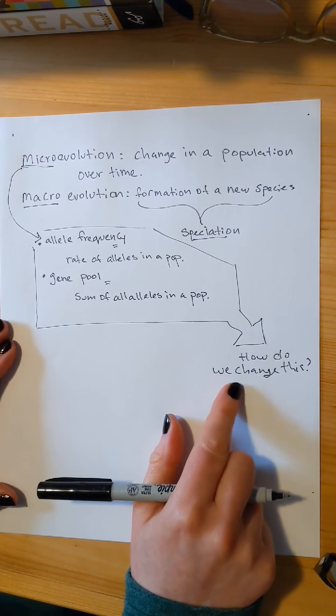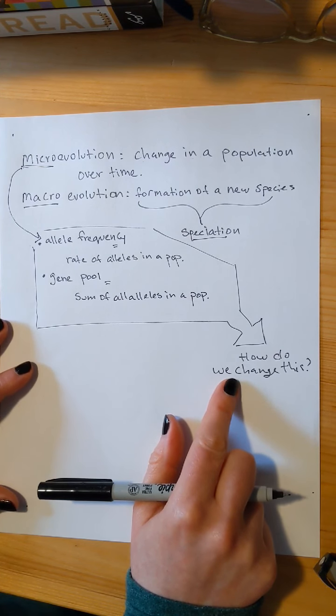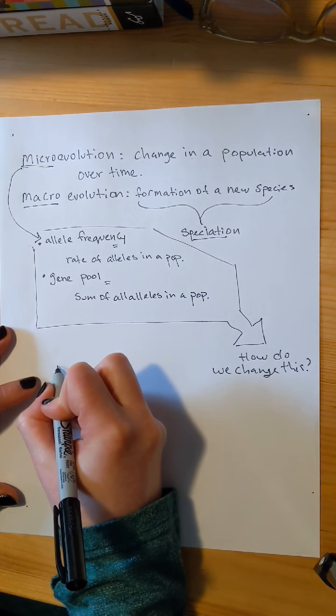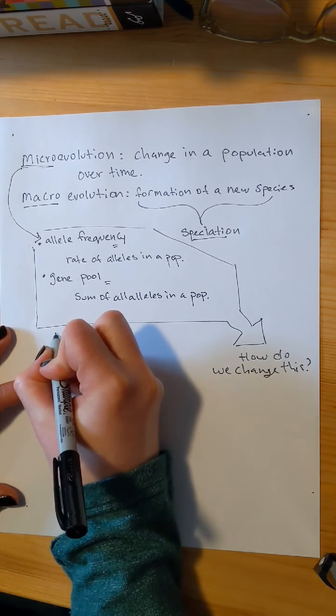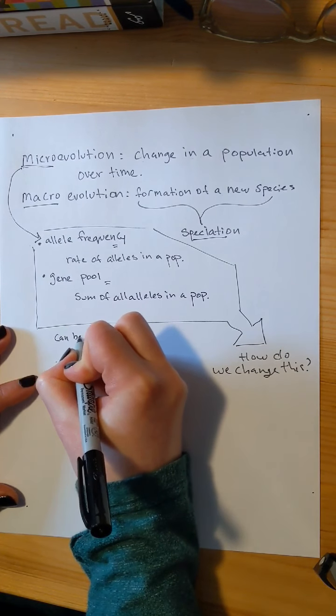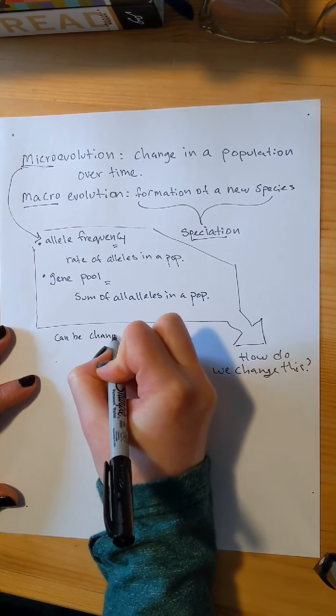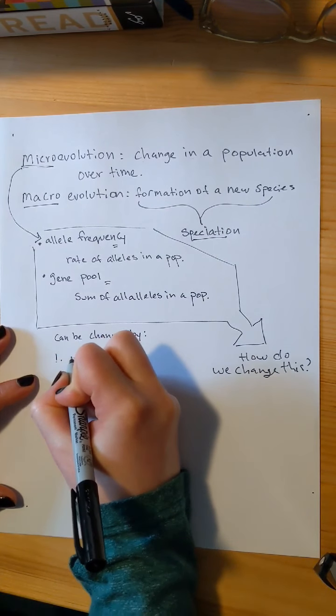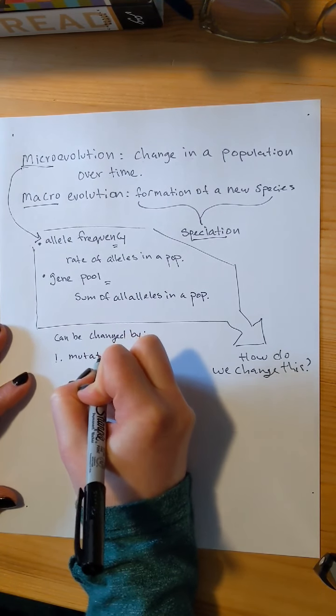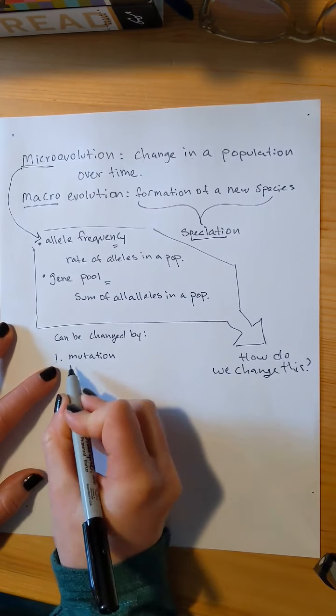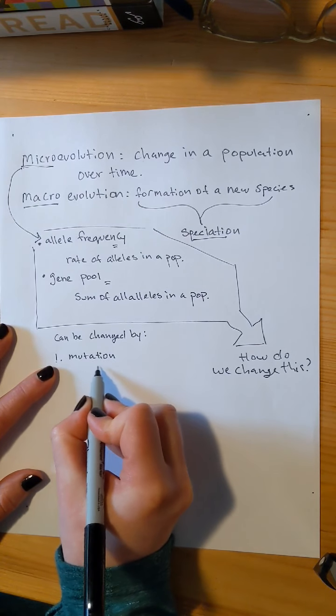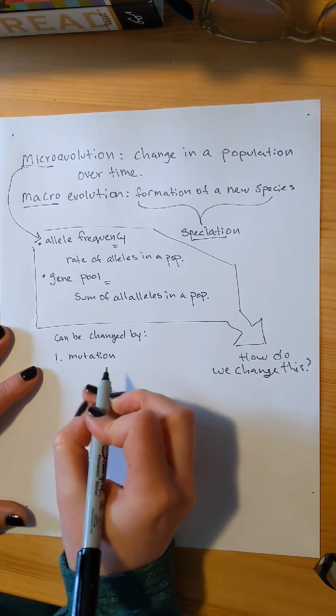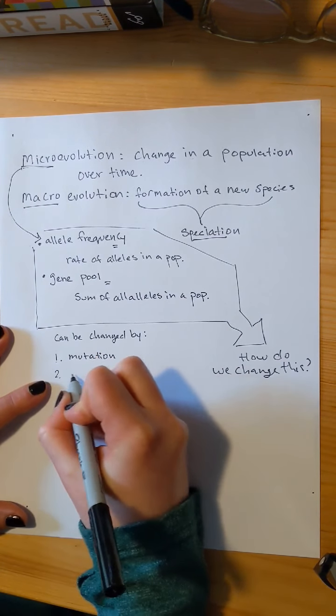And your notes don't have to look like mine, by the way. I just like to organize it kind of in a flow chart. So we can change our allele frequency in our gene pool in a couple ways. We can change it with mutation. You know all about mutation from cell biology.